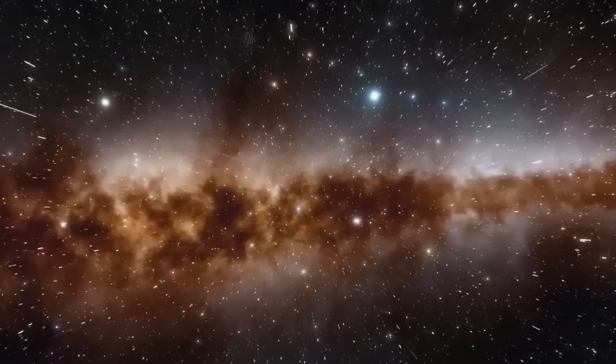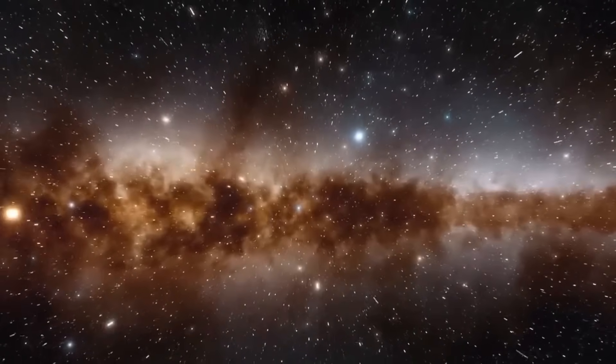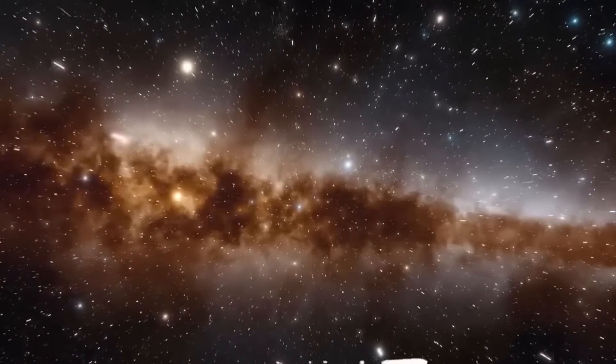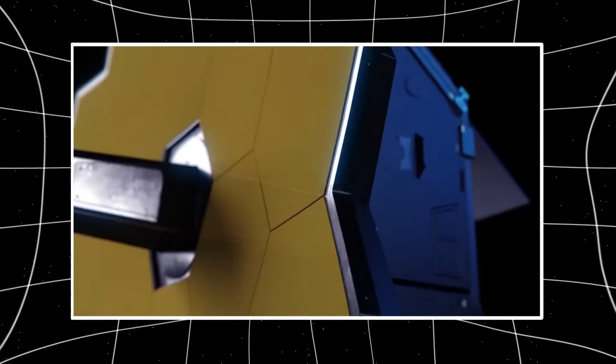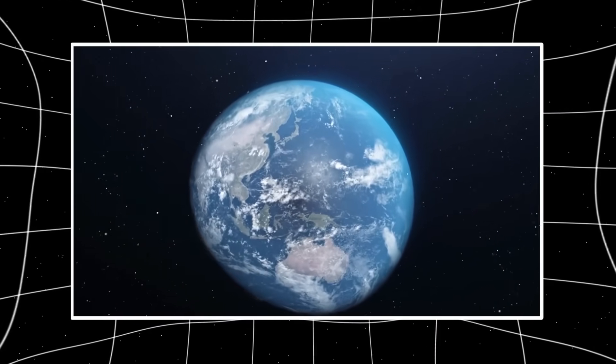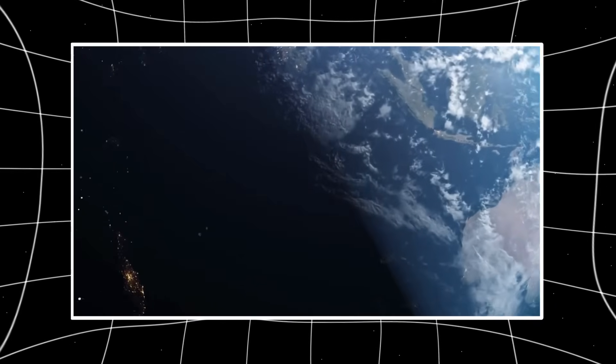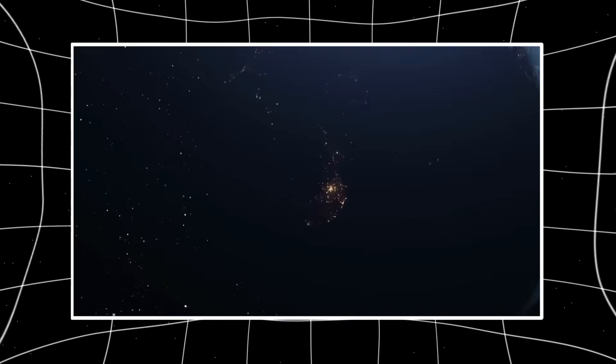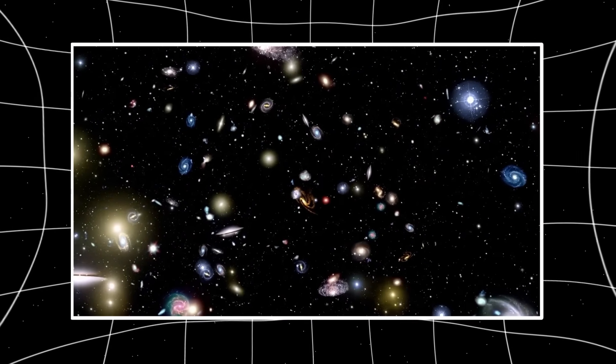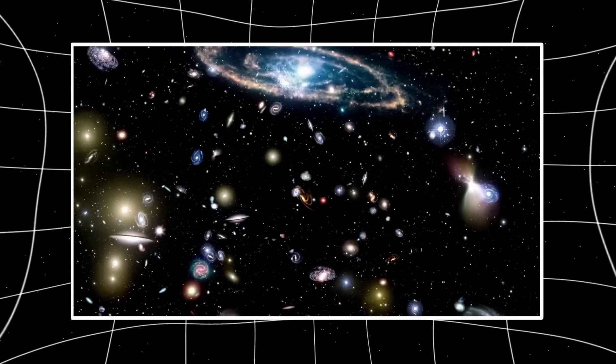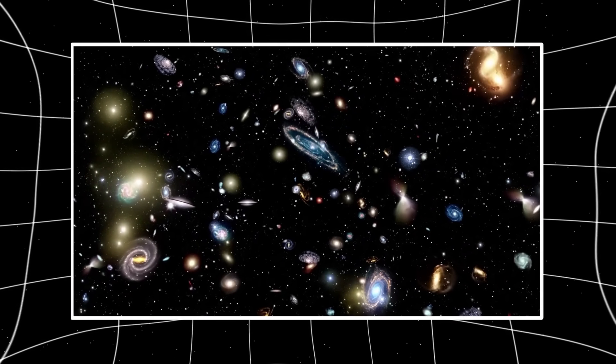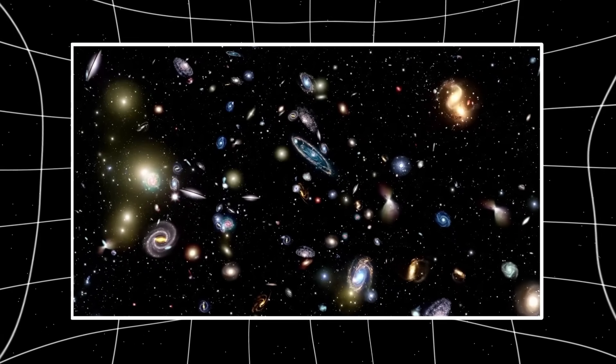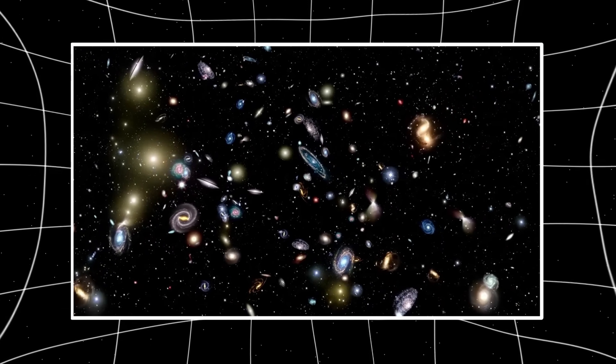Instead, Webb has uncovered luminous structured systems with defined spiral arms and heavy elements like carbon and nitrogen, proof that entire generations of stars had already lived and died in record time. These galaxies should not exist, not yet, not so soon. Their presence shatters the timeline of cosmic evolution, forcing scientists to admit that star formation and black hole growth must have begun earlier, faster, and through processes we still cannot explain.